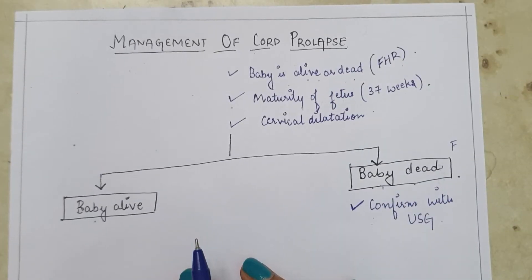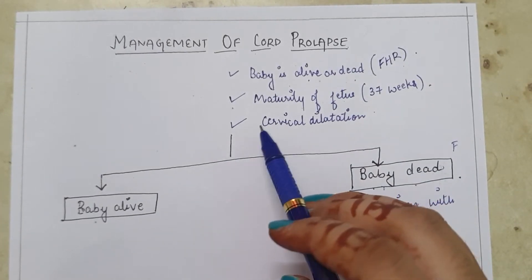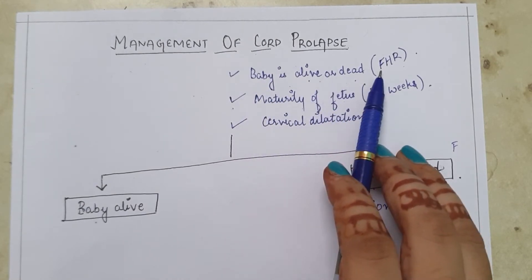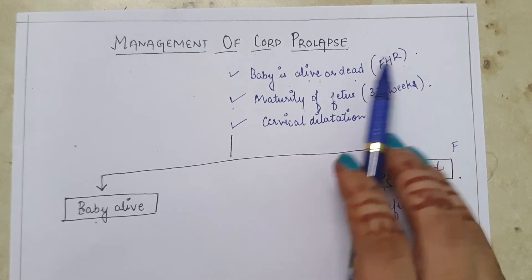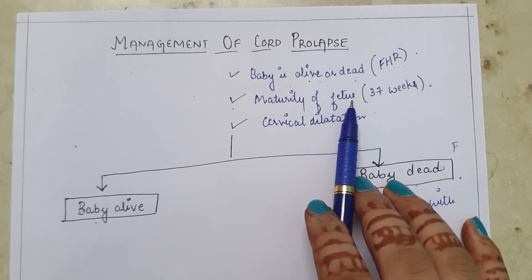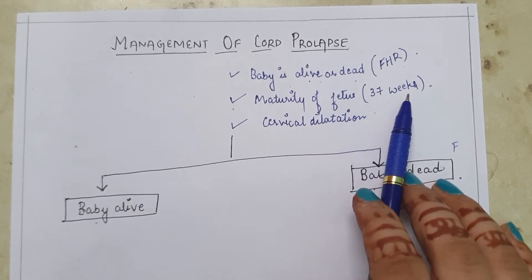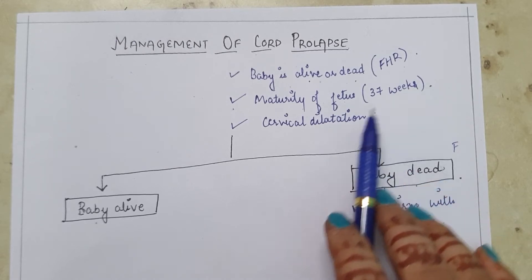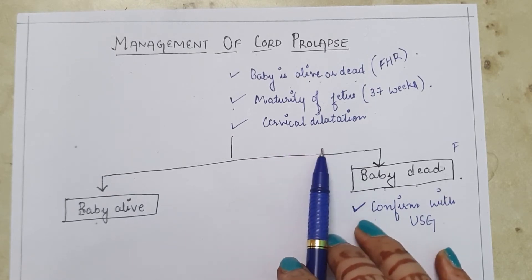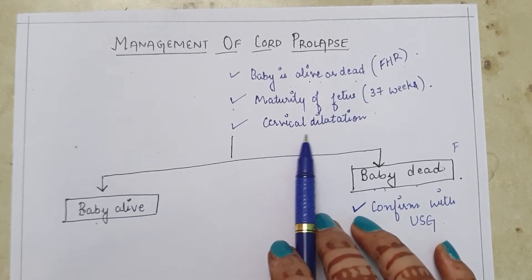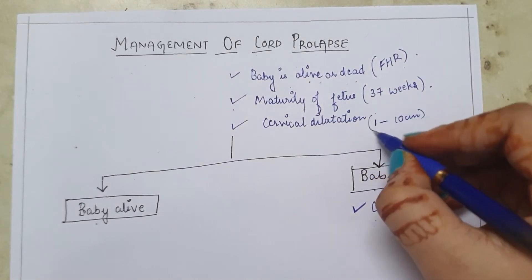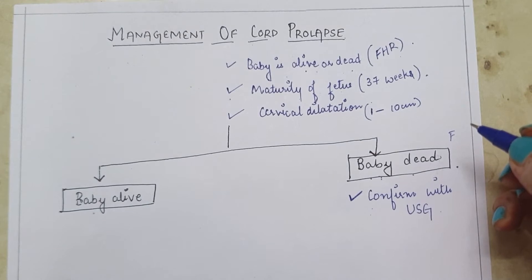Next is the management of cord prolapse. First, we should assess whether the baby is alive or dead by checking the fetal heart rate. Next, assess the maturity of the fetus — whether the mother is at least 37 weeks pregnant. Also assess the cervical dilatation from 1 to 10 cm, where 10 cm means full dilatation.